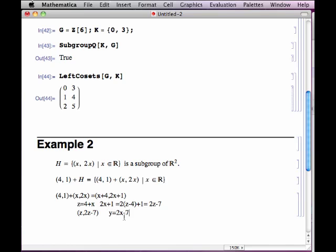Notice that that's a line that's parallel to the line I described by H. H was all the points on the line y equals 2x. So those two lines don't intersect. They're parallel. And every coset of H will have that similarity that it will be a line parallel to H. So we'll have slope 2. And the varying intercepts will determine the actual line.